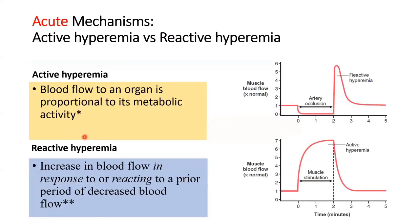Moving on to active and reactive hyperemia. Active hyperemia is increased blood flow to a tissue in response to its metabolic activity. If you increase metabolic activity there will be an increase in blood flow, and if you normalize it the blood flow will return to normal. This is called active hyperemia.